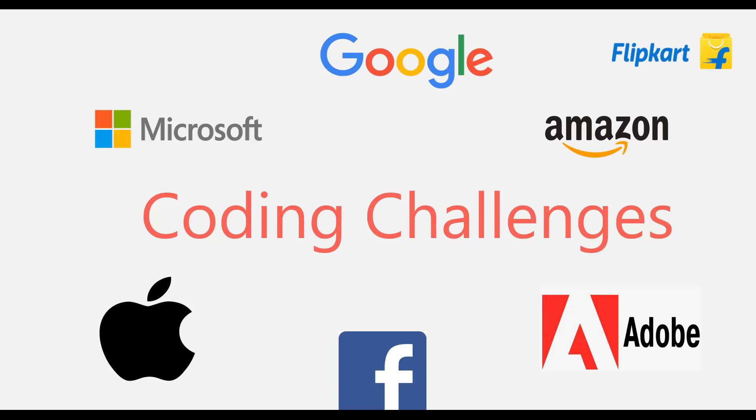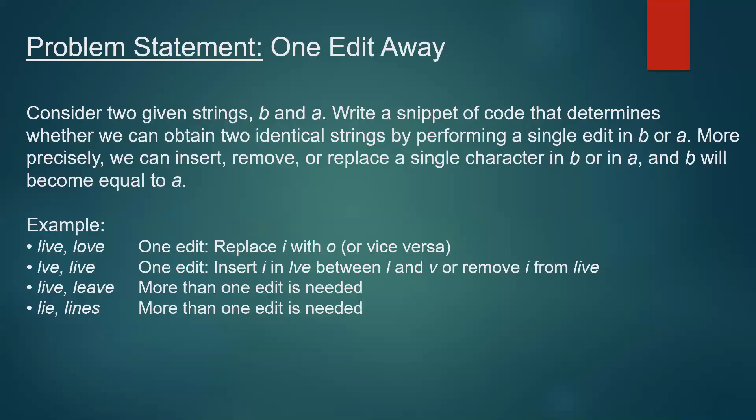All right, let's get started with our first coding question. The problem statement is: consider two given strings A and B. We need to write a code snippet which determines whether we can obtain two identical strings by performing a single edit in either A or B. To be more precise, we can insert, remove, or replace a single character in A or B so that B becomes equal to A. This is what we call 'one edit away', or in some places you might see this as the edit distance between two strings being one.